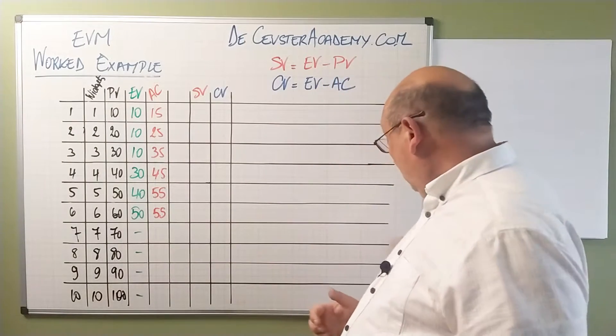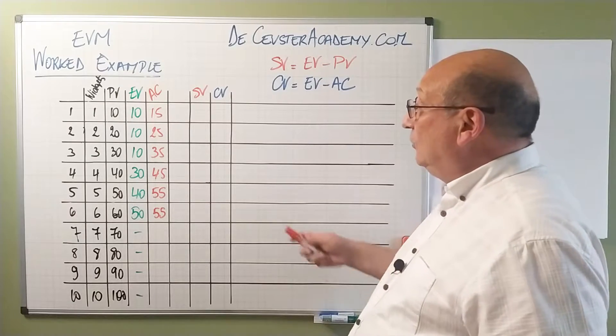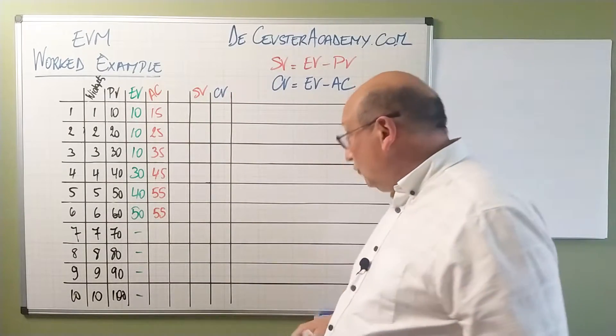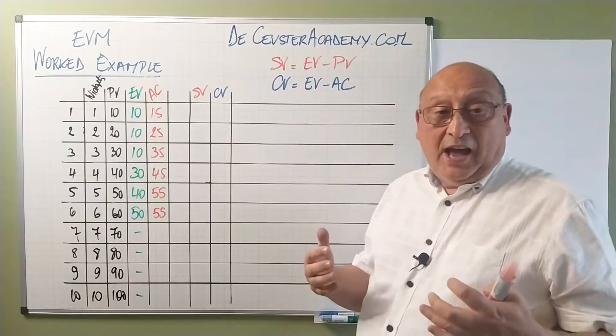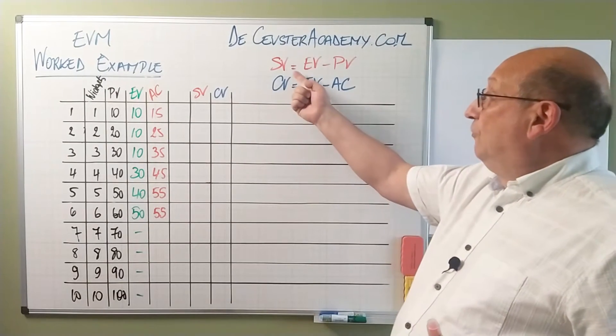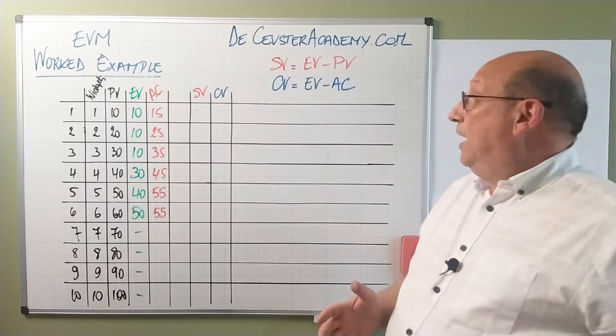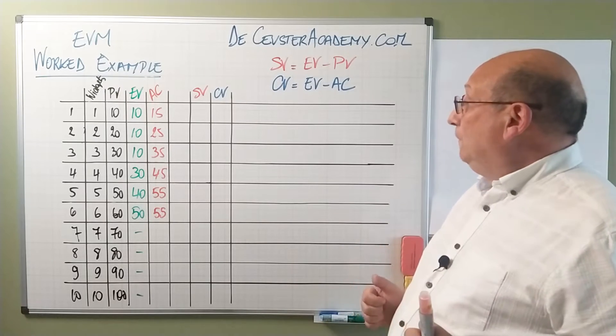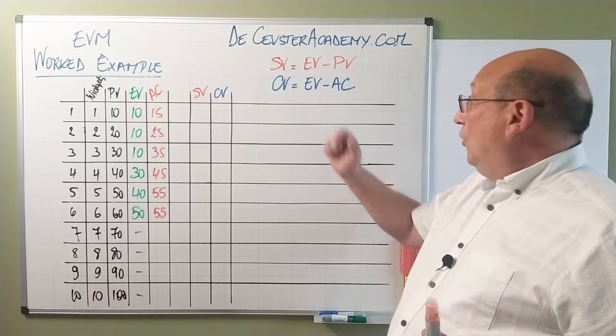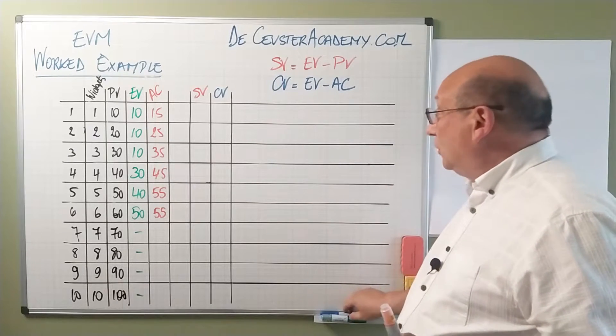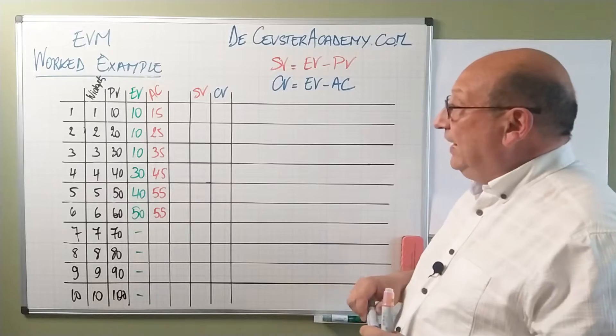Now what we have to do is calculate the schedule variance and the cost variance for every period. I remind you that the formula for the schedule variance is earned value minus planned value and the cost variance is earned value minus actual cost. Let's now calculate them.